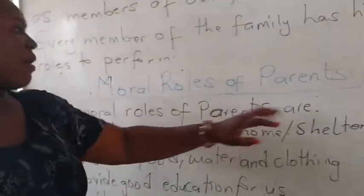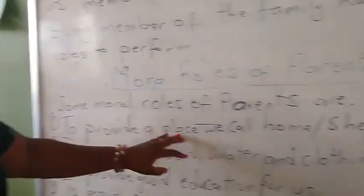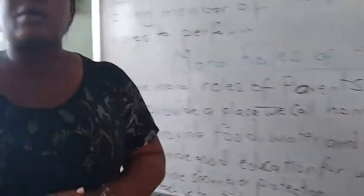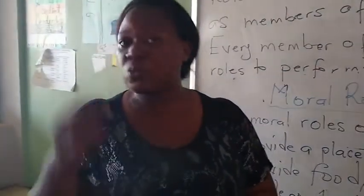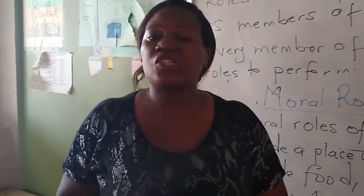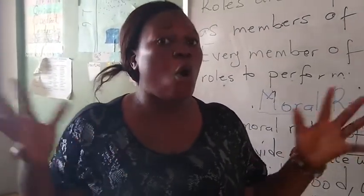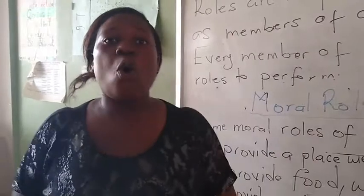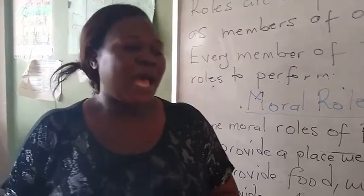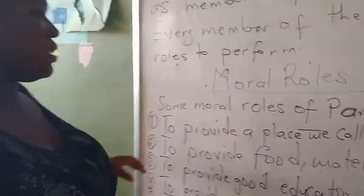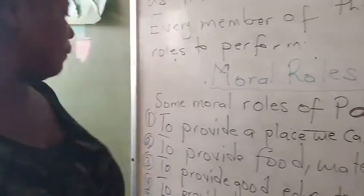Some moral roles of parents are: Number 1, to provide a place we call home, or shelter. It is the responsibility of our parents, not us as children, to provide a home — a place we call home. As children, we have to get a home, that is a shelter to live in.